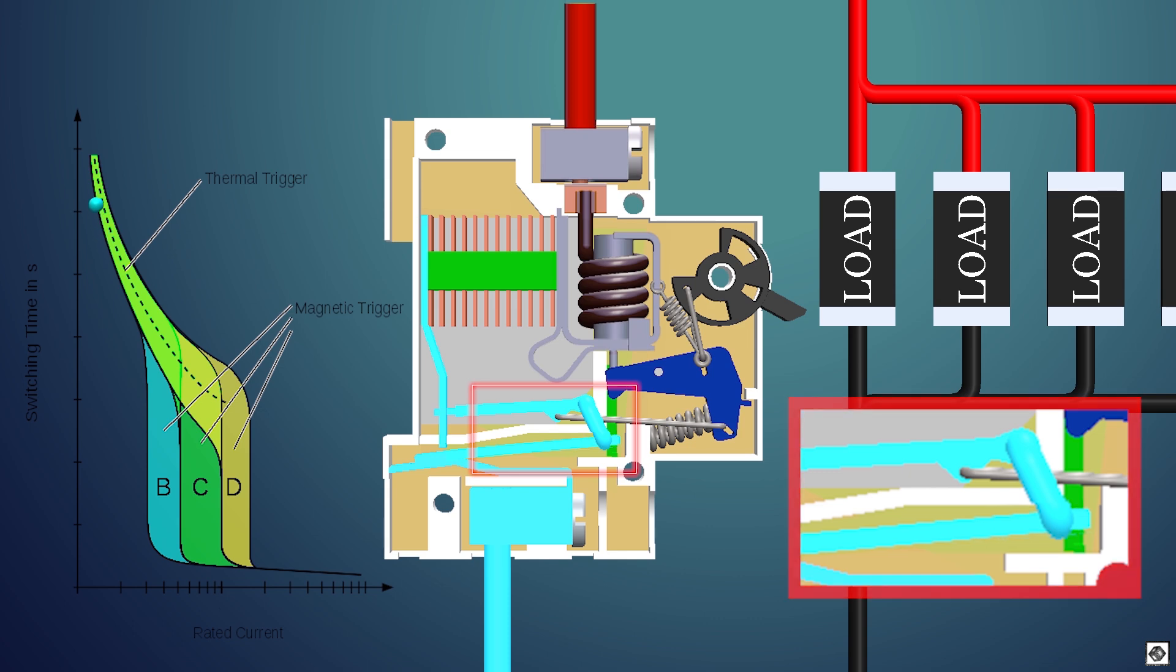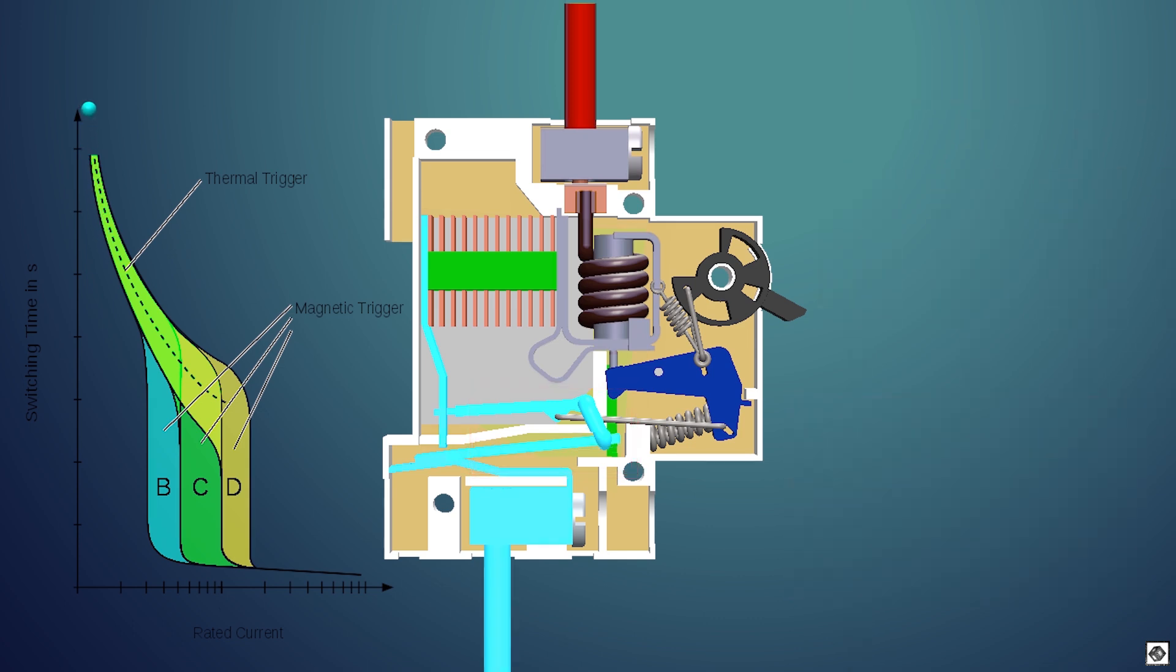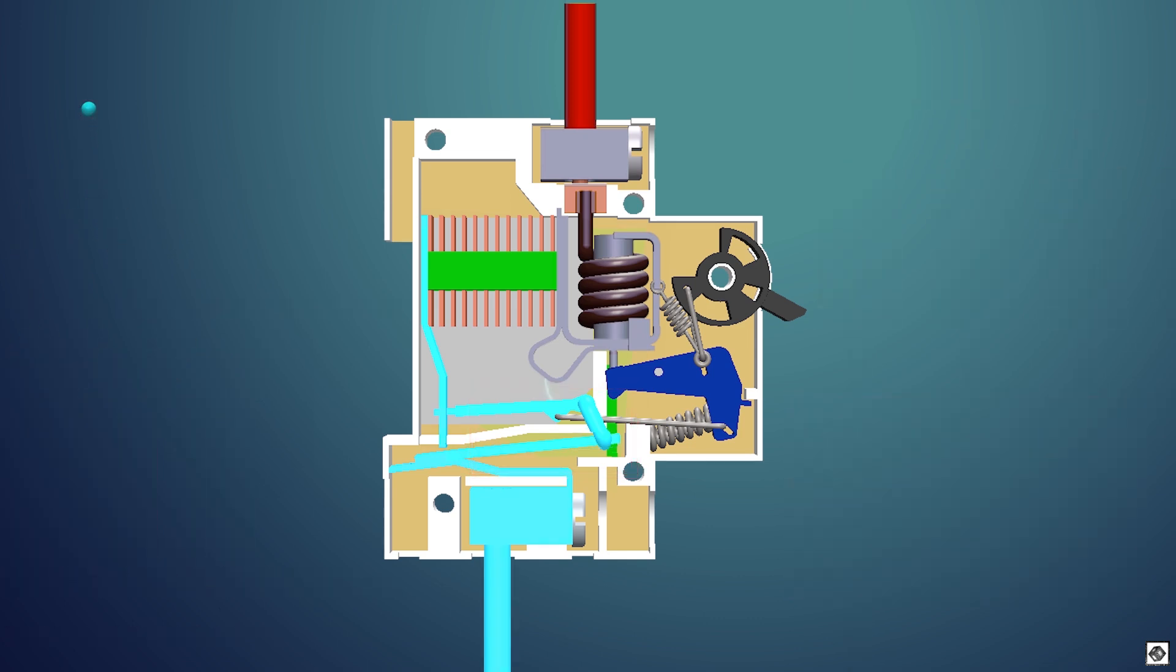As the circuit breaks, the current through the bimetallic strip stops and thus it regains its shape. At the same time, a spark can be generated between the contacts. This spark can damage the components and thus needs to be extinguished as soon as possible. Hence, we have a spark divider.